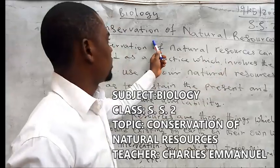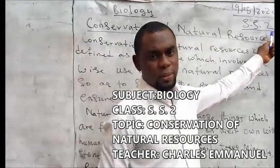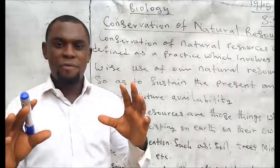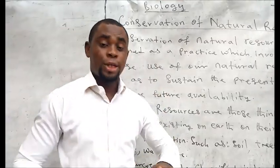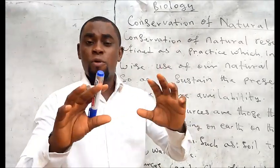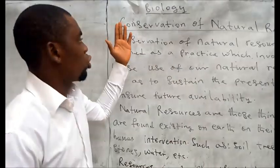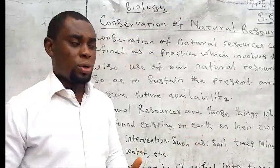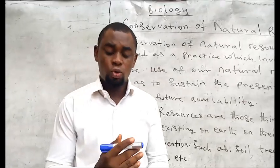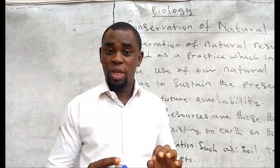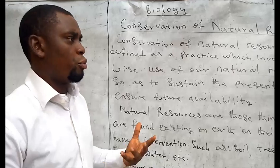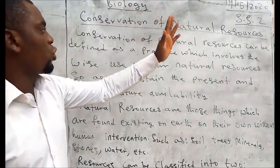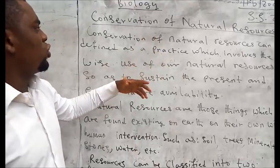This class is for SS2. Right now we are going to do a kind of overview — today we are going to have an overview of what conservation of natural resources is all about. Our teaching here has to do with step by step, so today we shall be doing an overview, a kind of preamble.